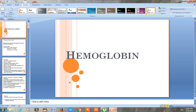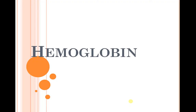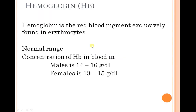Hi, this is M. Prasad Naidoo. Today we are discussing about hemoglobin. Hemoglobin is the red blood pigment extensively found in erythrocytes. The normal range is: males 14 to 16 grams per dl, and females 13 to 15 grams per dl.